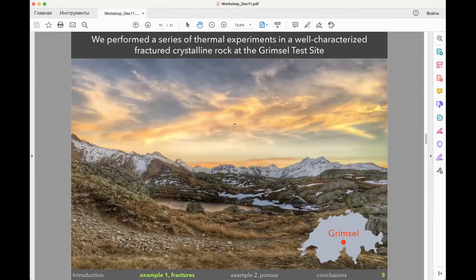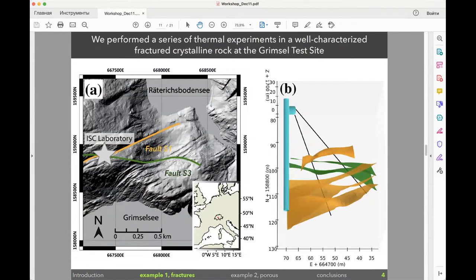I will show you this example from Grimsel test site, which is an underground laboratory in Swiss Alps. It's a fractured rock. We conducted an experiment there a few years ago. The idea was to create a small scale geothermal prototype. The first phase of this experiment was simply to characterize the rock mass. We have two fault zones intersecting the location of the site, and we drilled 15 boreholes towards these fault zones in order to characterize them because afterwards we wanted to stimulate them with high pressure. One phase of the experiment was to conduct thermal experiments in order to characterize the rock mass.